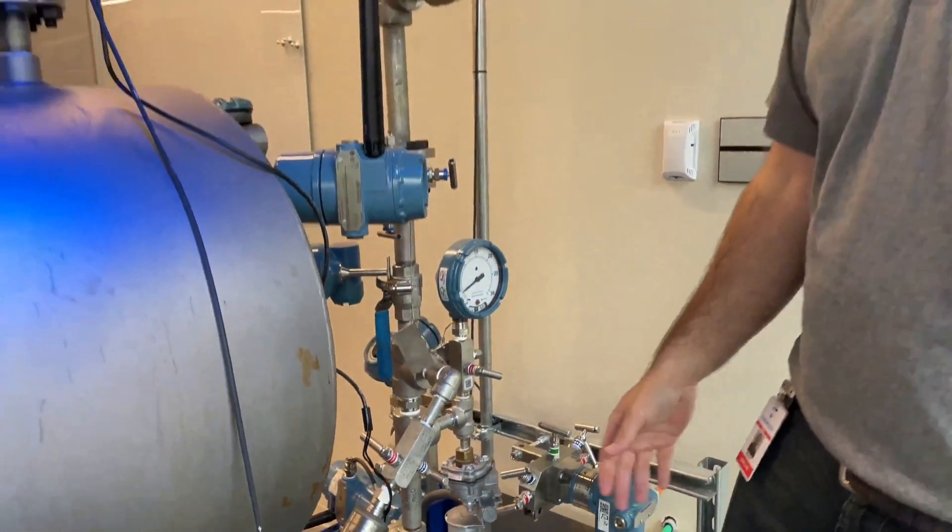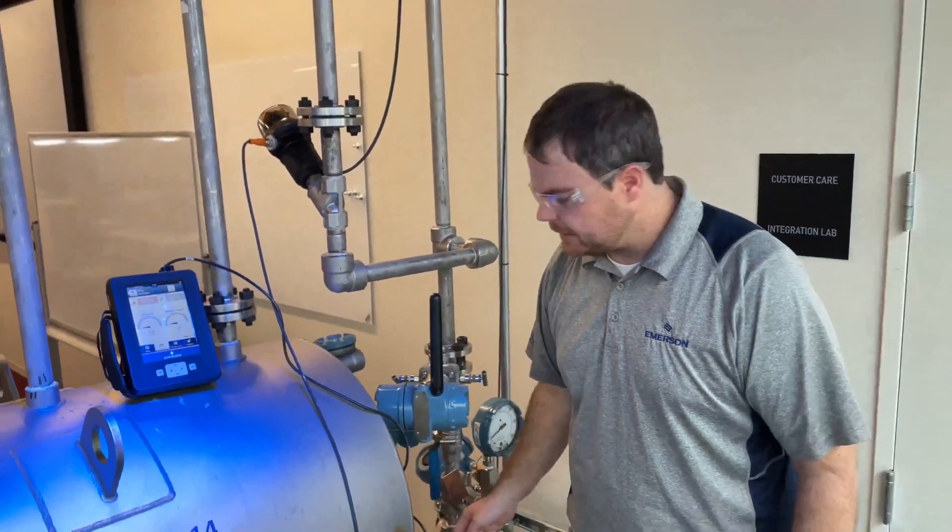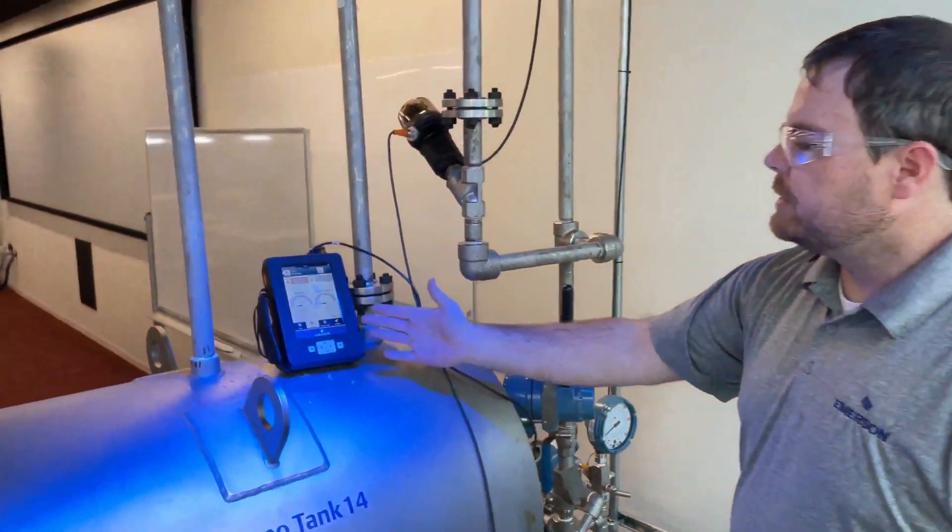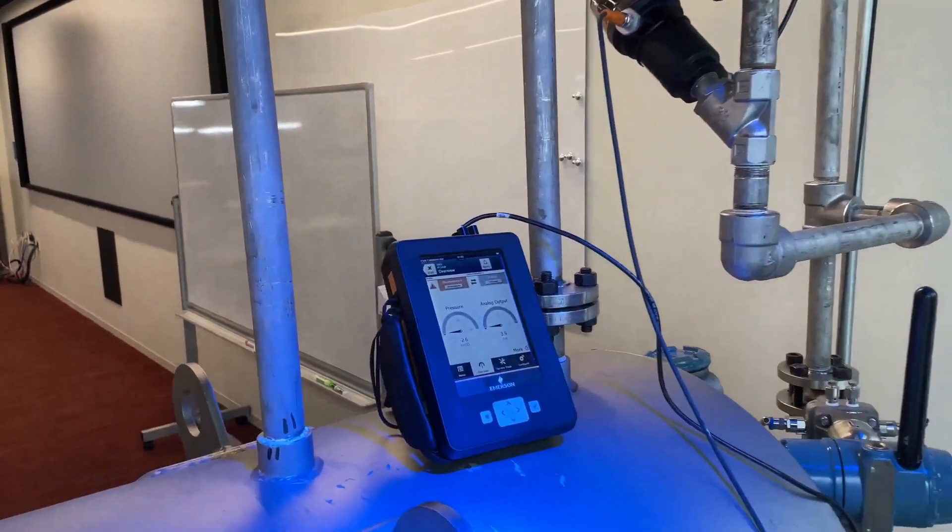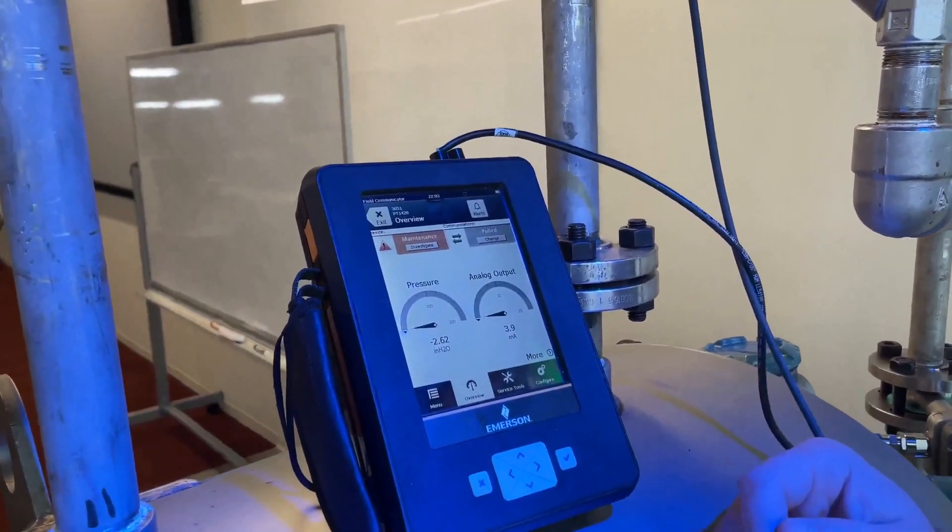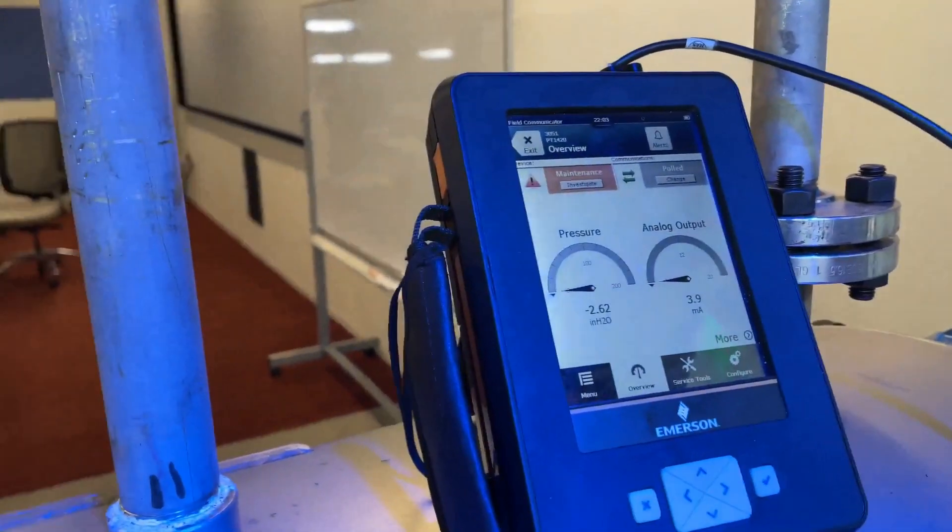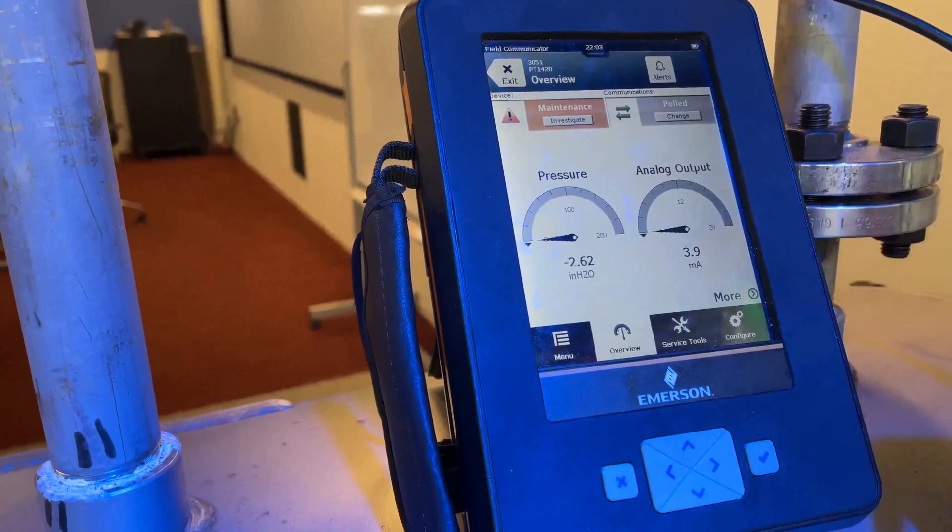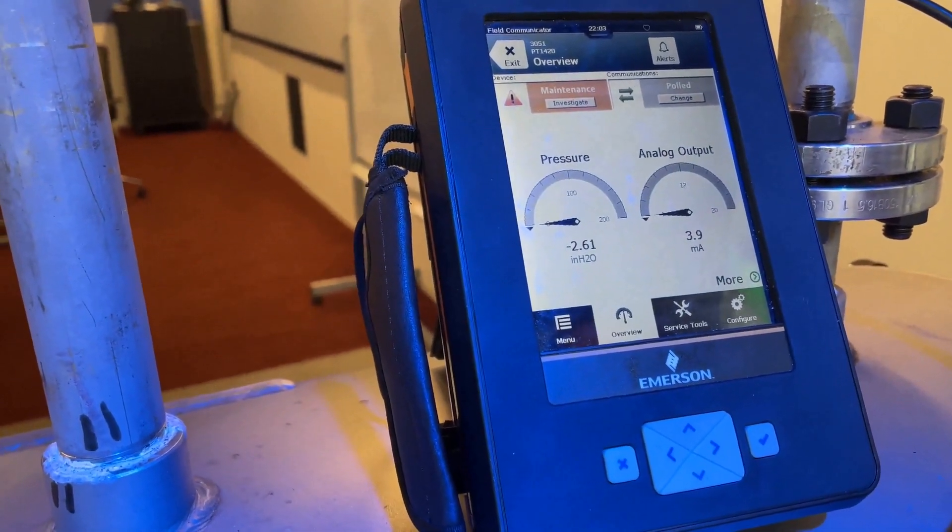So to perform this, make sure you are vented. As you can see from our Trex screens, just by mounting this transmitter upside down, we have induced a pressure as well as changed our milliamp output.